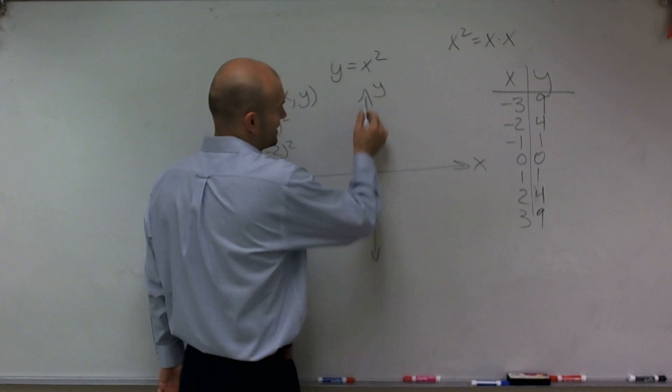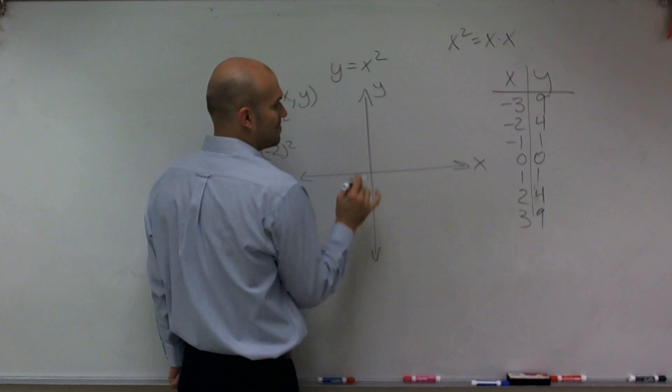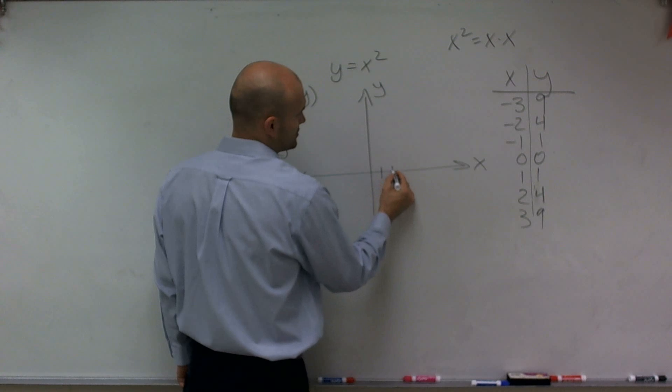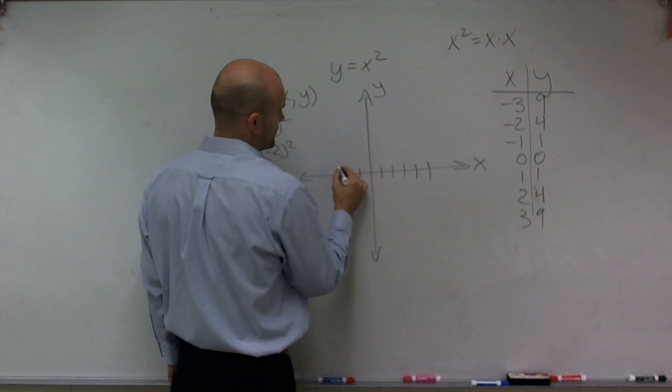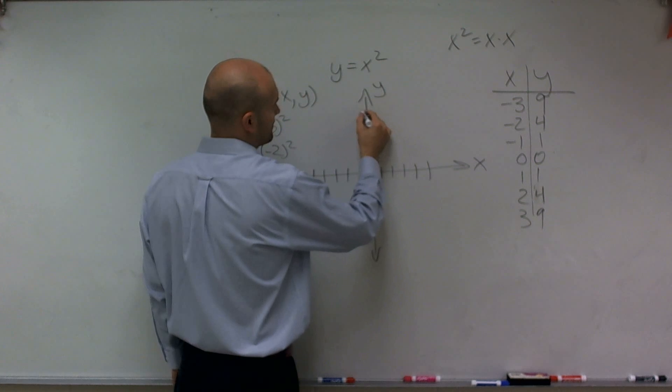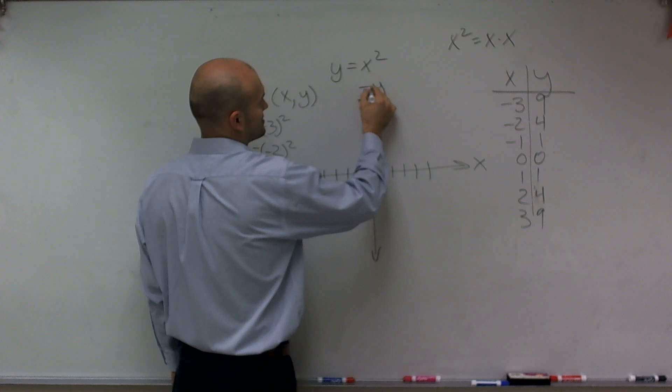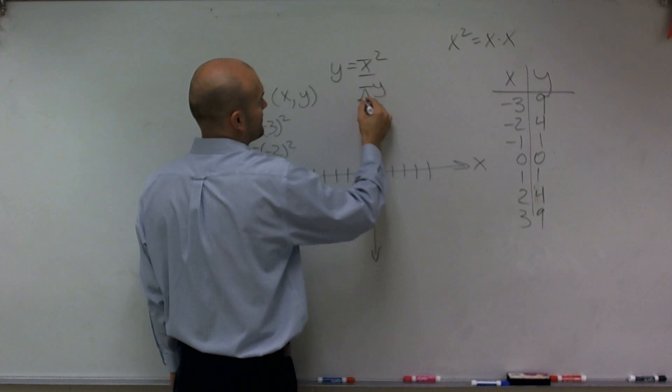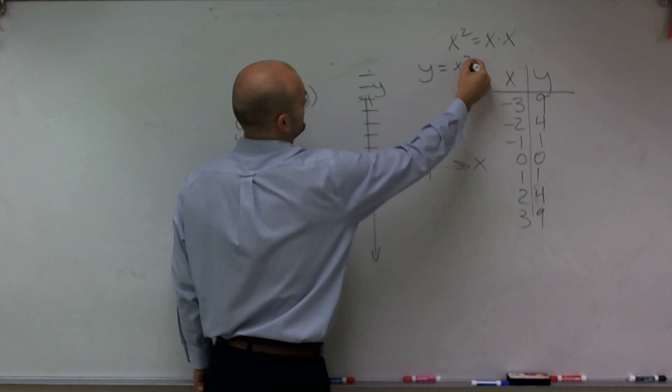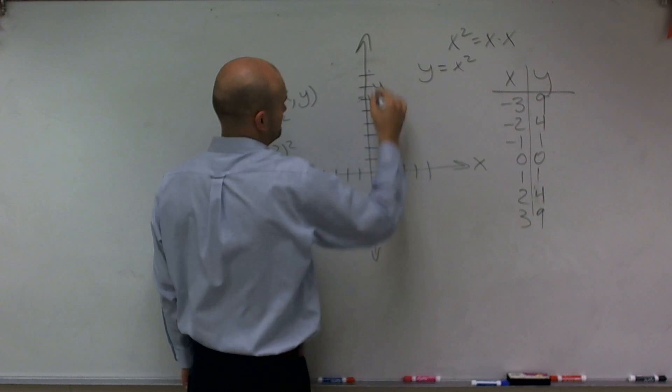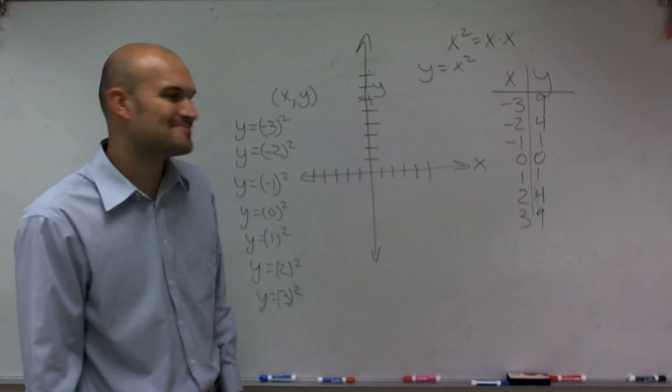So now what we're going to do is I'm going to go back and I'm going to plot these points on my graph. So I'll have 1, 2, 3, 4, 5 on each axis, then 6, 7, 8, 9. I'm going to continue this up a little bit just because I've kind of run out of space.